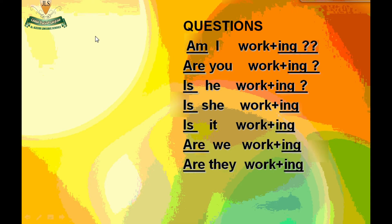For questions, start with the verb to be, followed by the pronoun or subject, plus the verb in -ing form. Am I working? Are you working? Is he working? Is she working? Is it working? Are we working? Are they working?